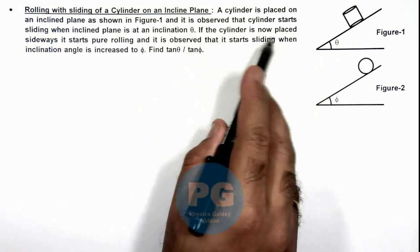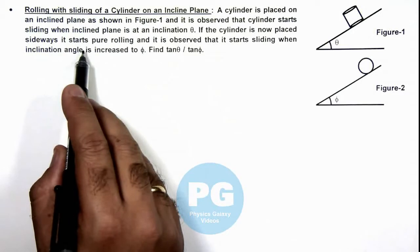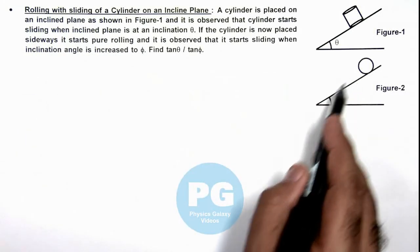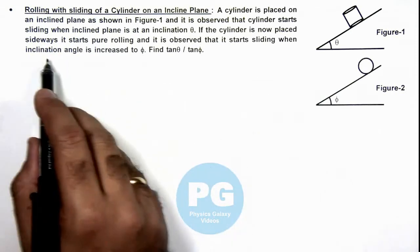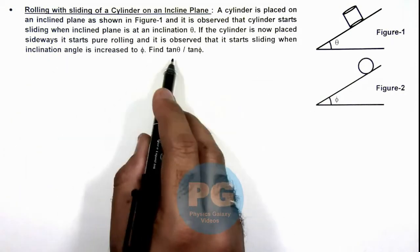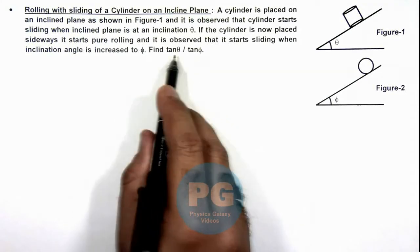And it is saying if the cylinder is now placed sideways, it starts pure rolling and it is observed that it starts sliding when the inclination angle is increased to phi. And here we are required to find the value of tan theta by tan phi.